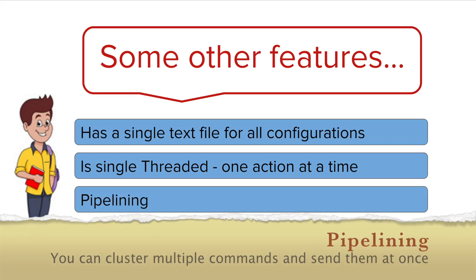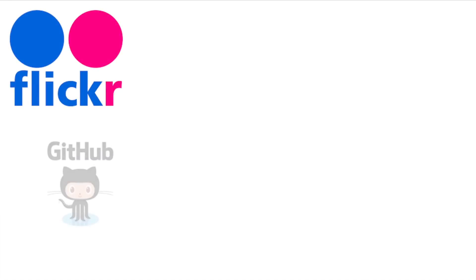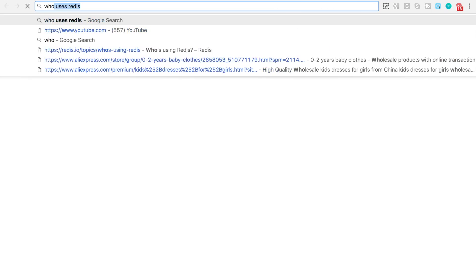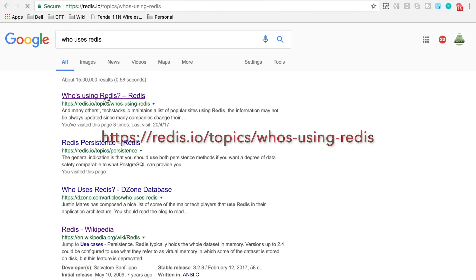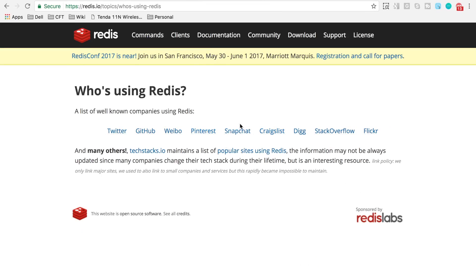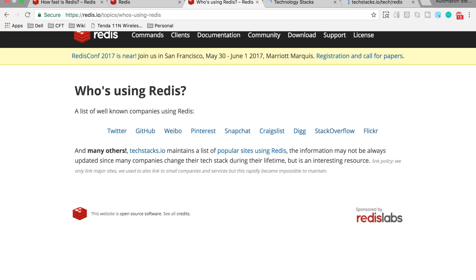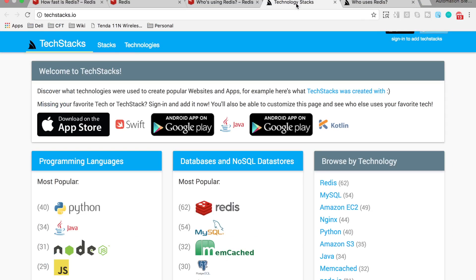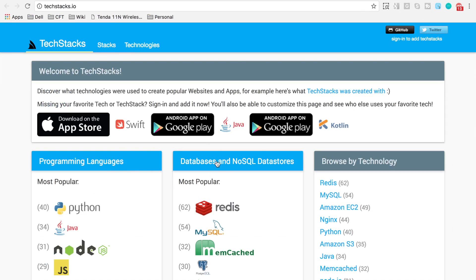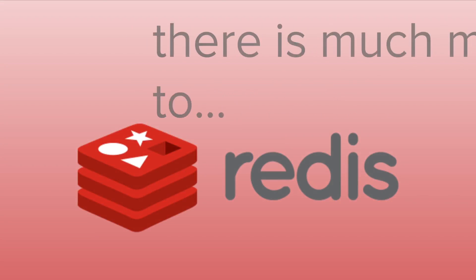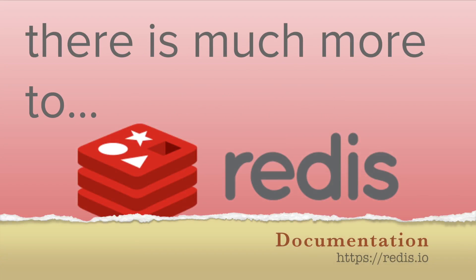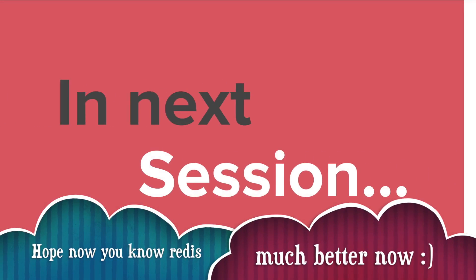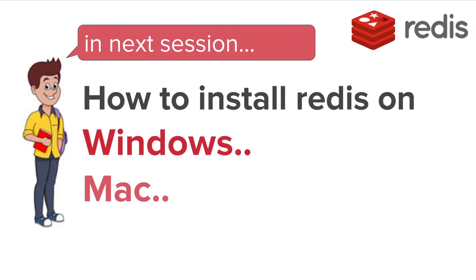There are big names who use Redis. Let us go to our browser and type who uses Redis. Here you can see some major names who are using Redis. They have also given two links showing popular sites using Redis and a comparison of various databases and NoSQL data stores. There is much, much more to Redis. You can go to Redis.io and there is a full and very, very intuitive documentation on Redis. In the next session we are going to install Redis on Windows, Mac and Linux.